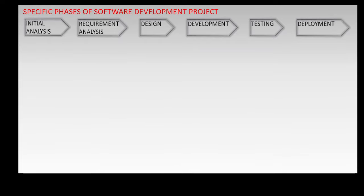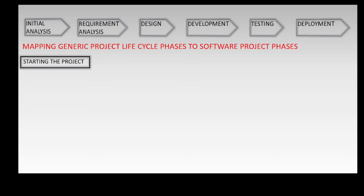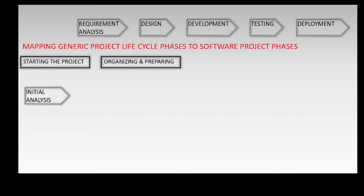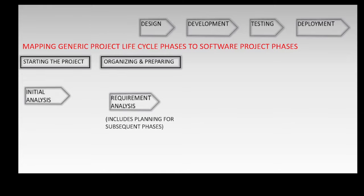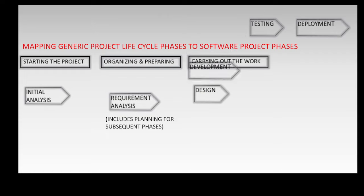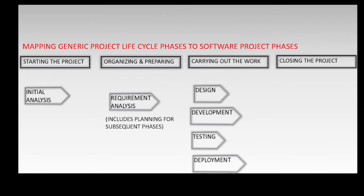For example, the specific phases of a software development project are: initial analysis, requirement analysis, up to deployment. The mapping between the generic project life cycle phases and the specific phases of a software development project is as follows: starting the project is mapped to initial analysis; organizing and preparing is mapped to requirement analysis, which also includes planning for subsequent phases; carrying out the work is mapped to design, development, testing, and deployment; and closing the project is mapped to post-deployment or closing group activities.